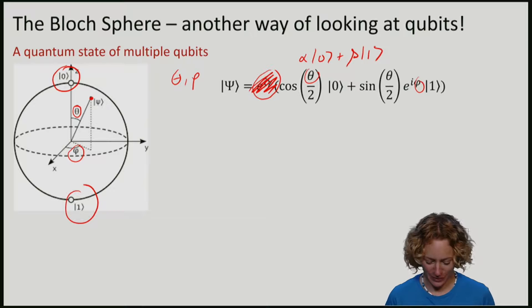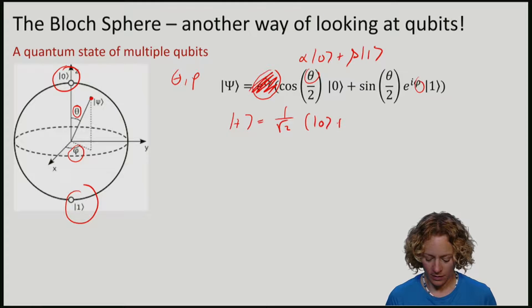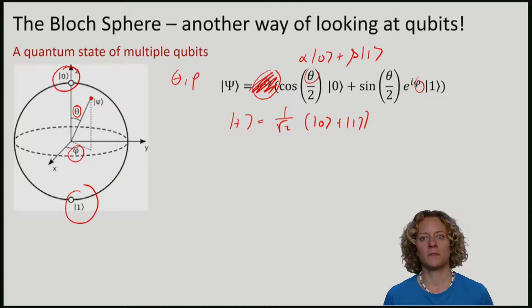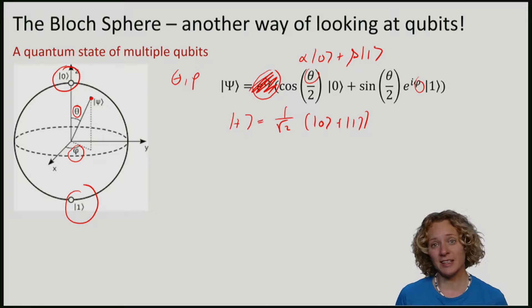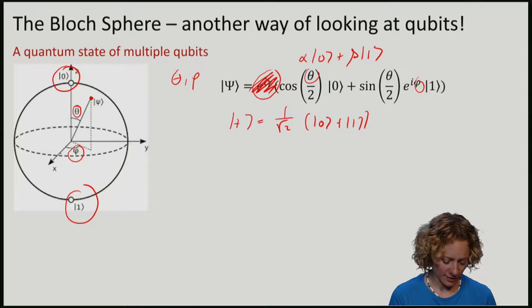For example, for the state plus, this representation is particularly easy. Phi is 0 and we can easily see that the point is here on the x-axis.